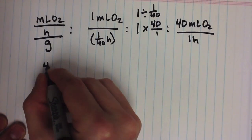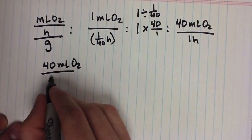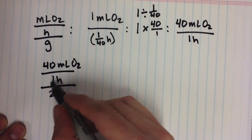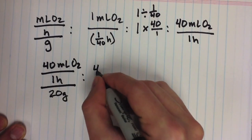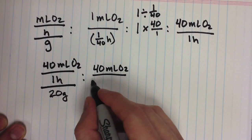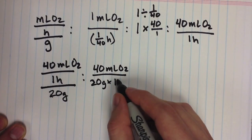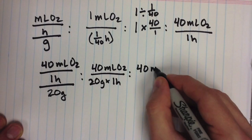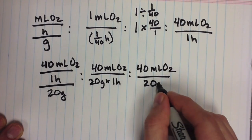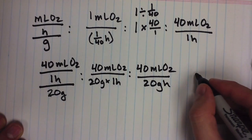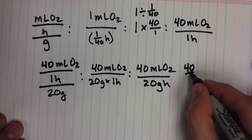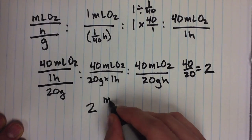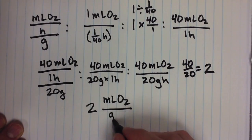We now take 40 milliliters of oxygen per hour and divide by 20 grams. Since hours and grams are both denominators, we multiply them: 40 milliliters of oxygen divided by 20 gram hours, which simplifies to 40 divided by 20, equaling 2. So the final answer for the metabolic rate of the mouse is 2 milliliters of oxygen per gram hour.